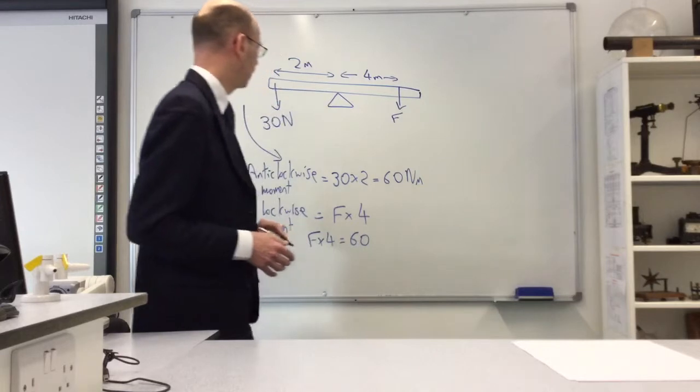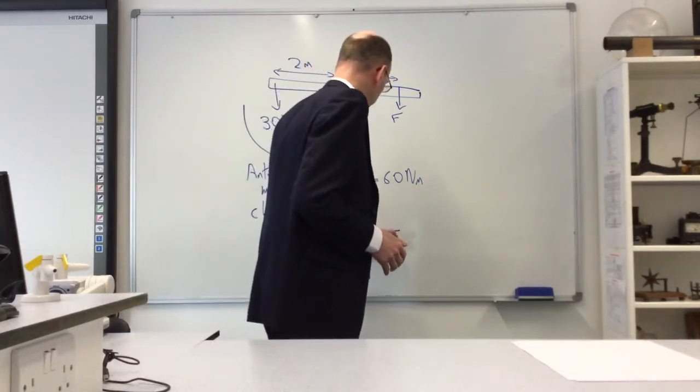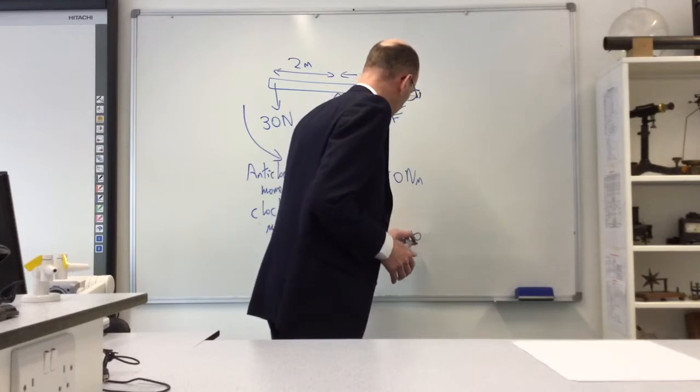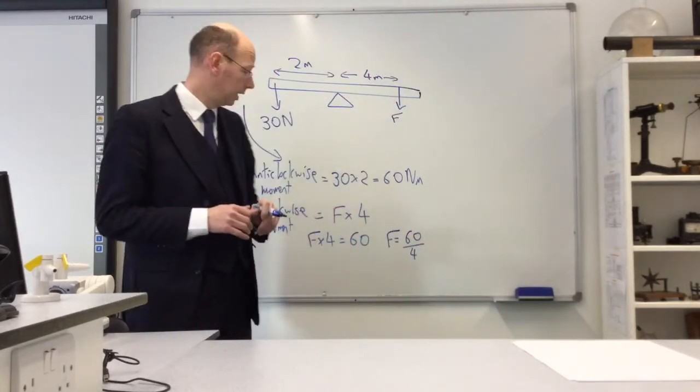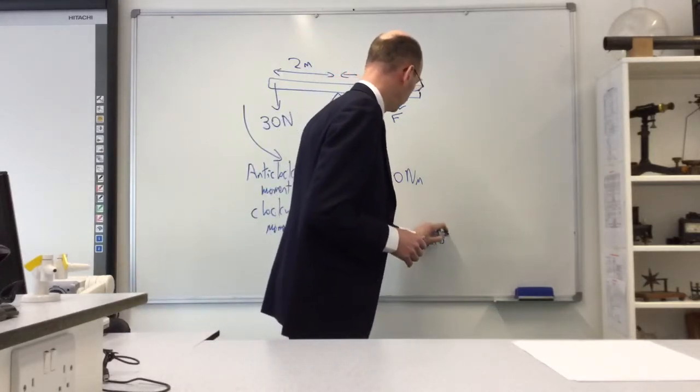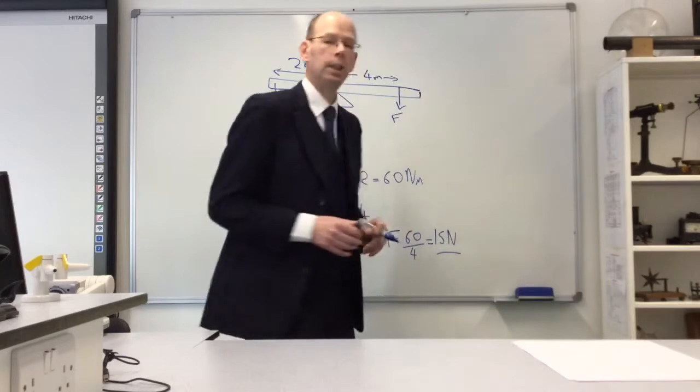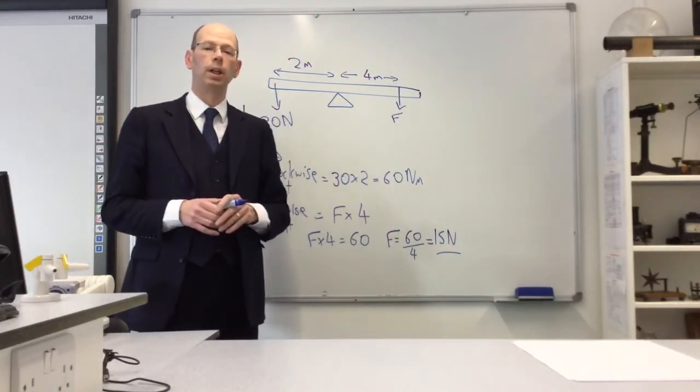F equals 60 divided by 4, which is the same as 30 divided by 2, giving us 15 newtons. That's an example of how we use the principle of moments to work out unknown forces.